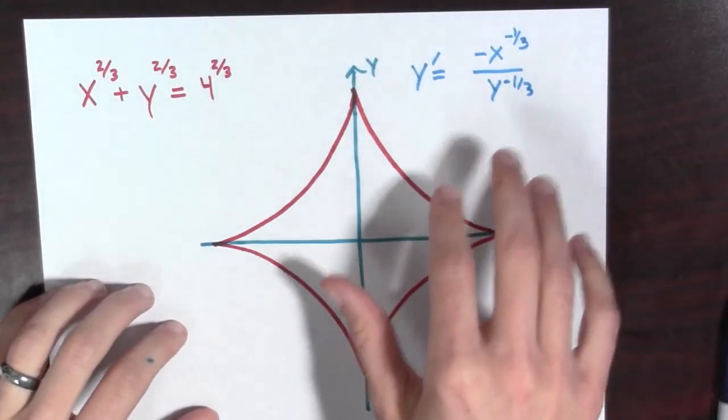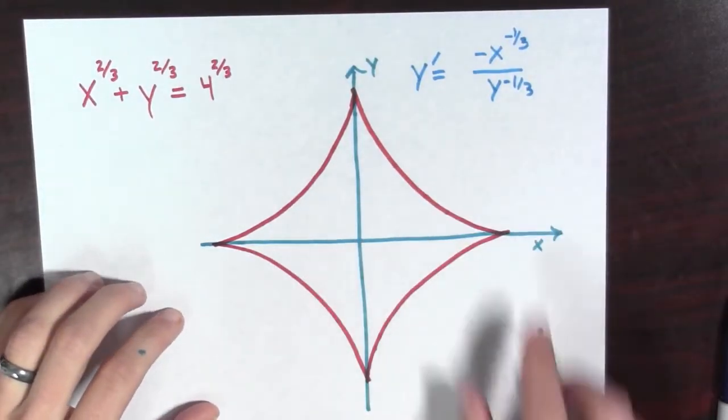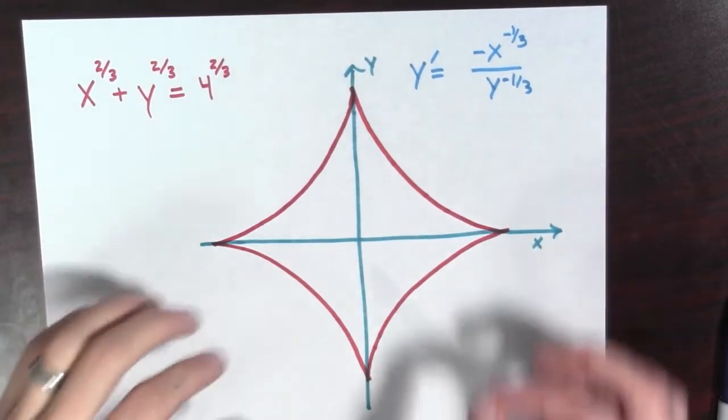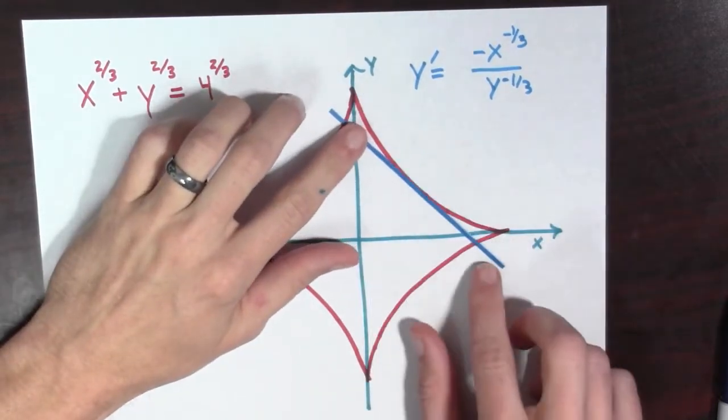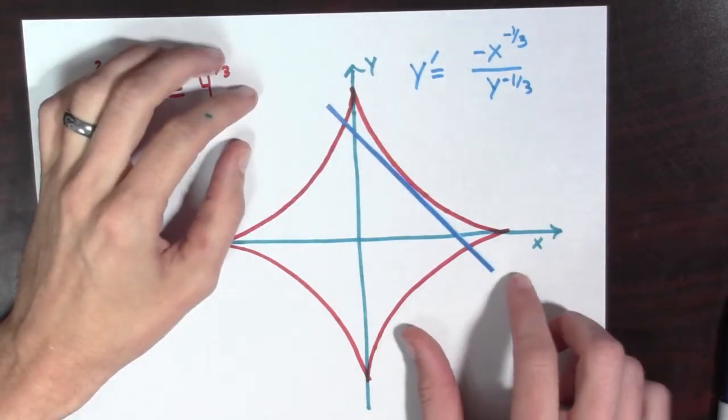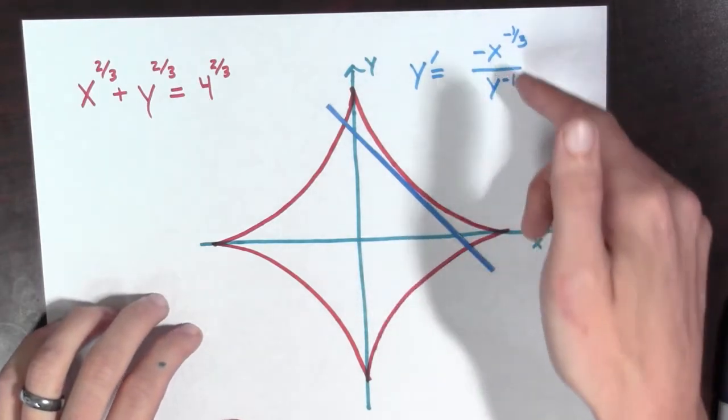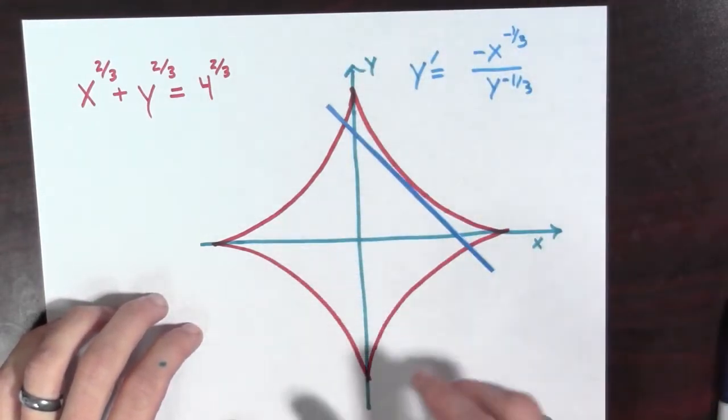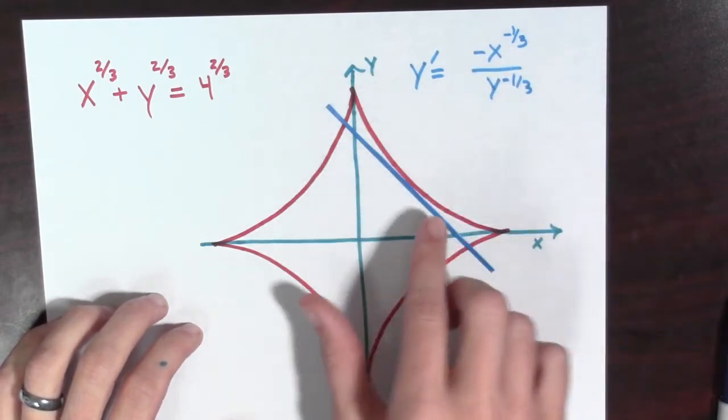So let's look at this derivative a little bit more. If x equals y at points on the curve, then the slope of the tangent line looks to be around -1 here. And that's correct, because if x and y are equal, then this slope equals -1.